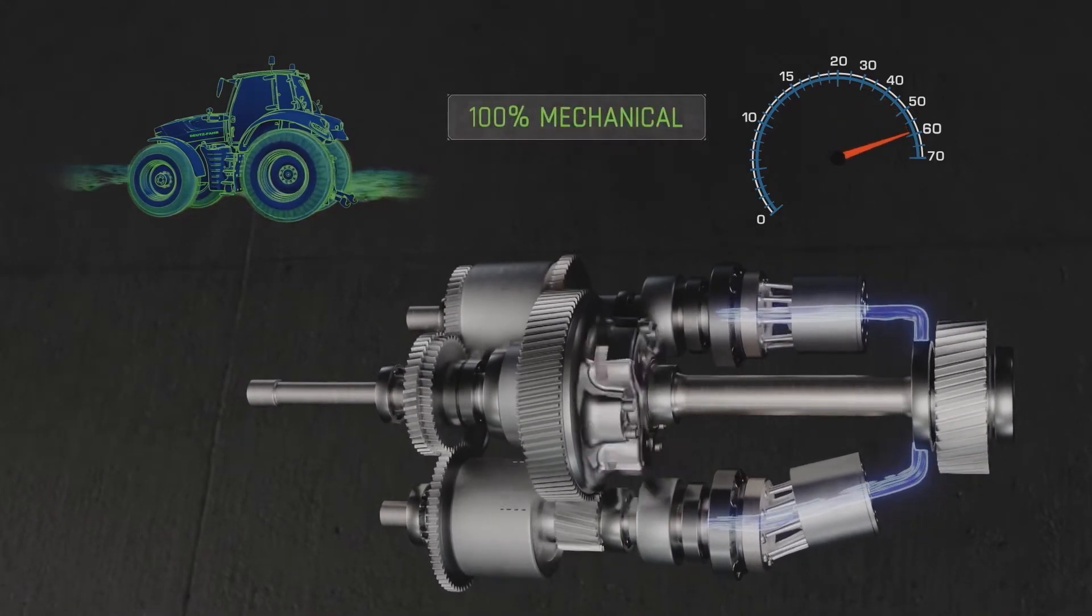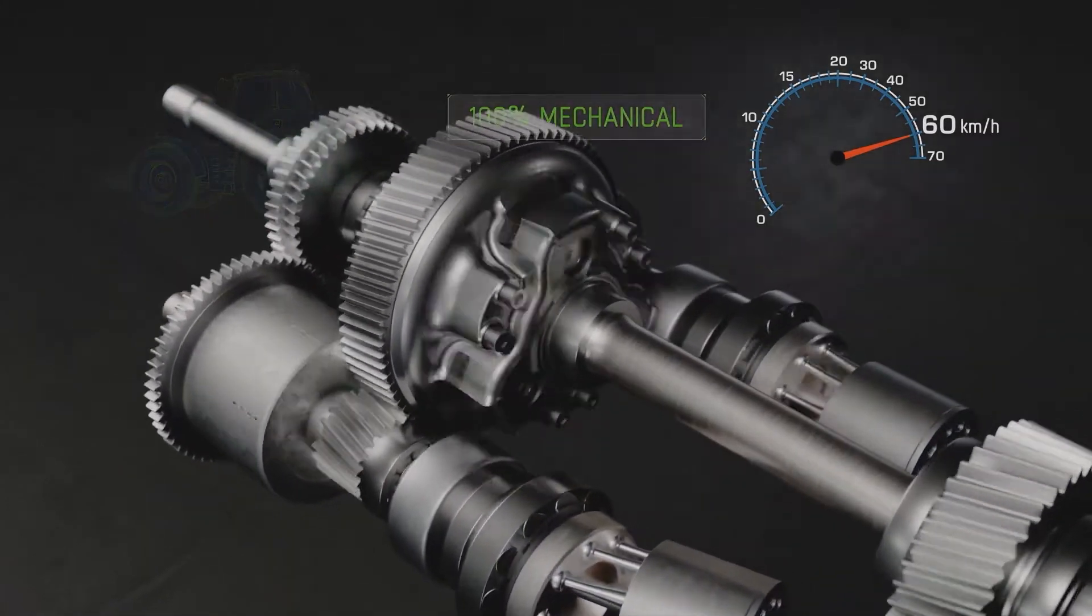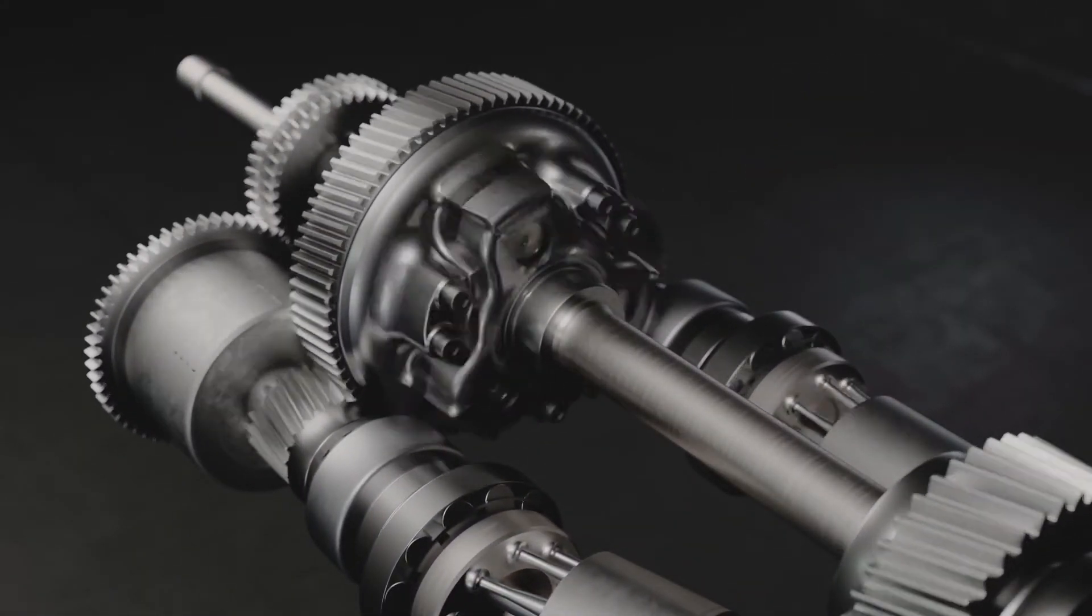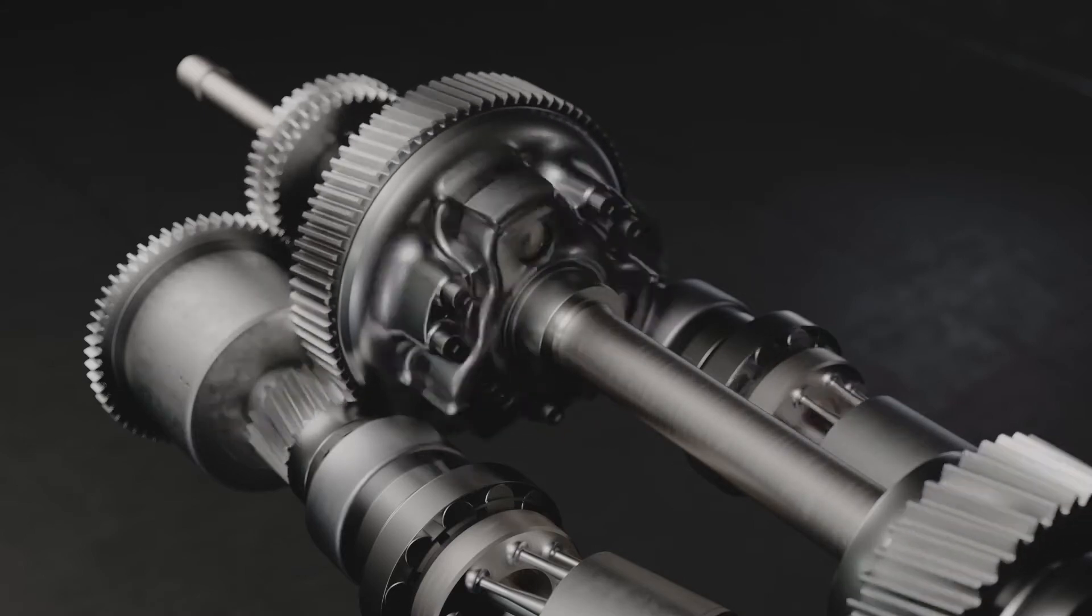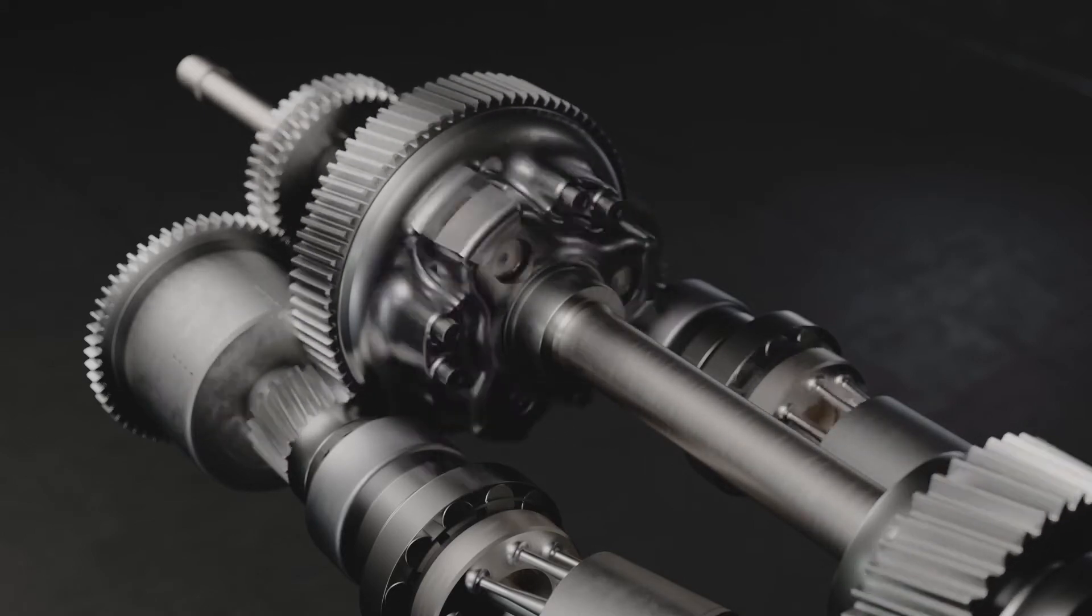This is made possible by the multi-stage planetary gear unit, which not only splits the power flow into the mechanical and hydraulic areas, but also combines them again afterwards.